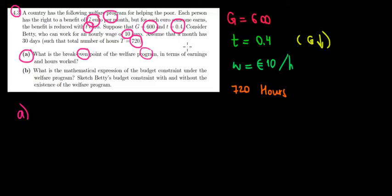Break-even would mean that the benefit that we get from the government is offset by a certain cost. So that benefit of 600 euros must be offset by the taxes that we pay on our earnings.